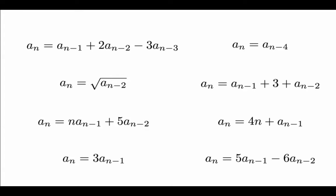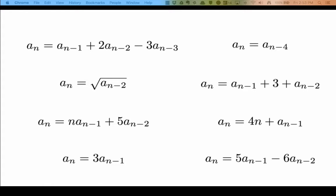The order of a recurrence relation refers to the maximum number of steps backwards we have to take in order to do the recursion. We're only going to be concerned for now with recurrence relations of orders one and two. The only ones up here on the screen that have orders one and two are these.